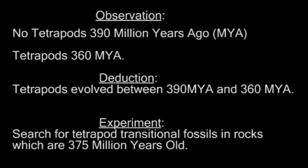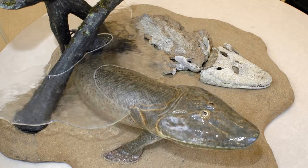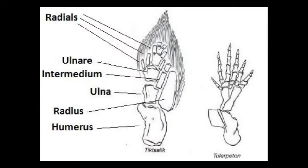Tiktaalik has gills, scales, and fins — it clearly lived in the water. But more importantly, it has eyes and nostrils on the top rather than the sides of its skull, enabling it to peer above the water. It also had robust fins allowing it to push itself above the water and look around. Additionally, these fins have the precise arrangement of bones predicted by comparative anatomy. These appendages are best described as half-fin, half-leg.